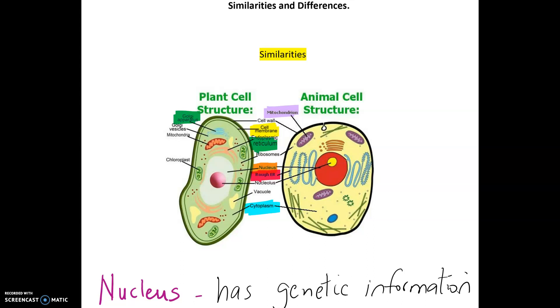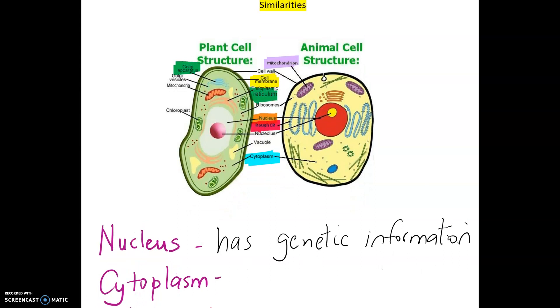The next structure we will be looking at which is highlighted here in blue is cytoplasm. As you can see cytoplasm covers most of the cell in terms of space. So cytoplasm is where the chemical reaction takes place.